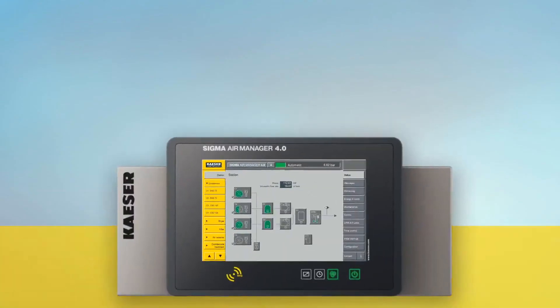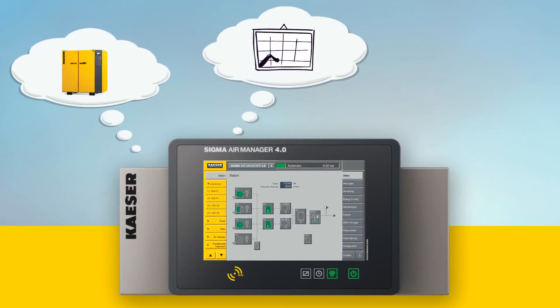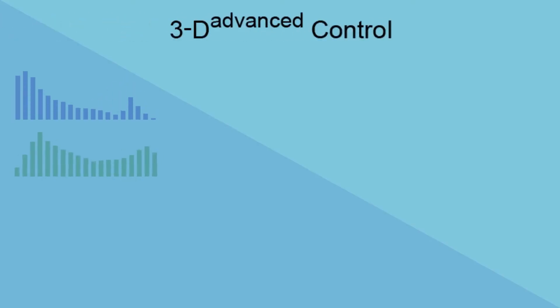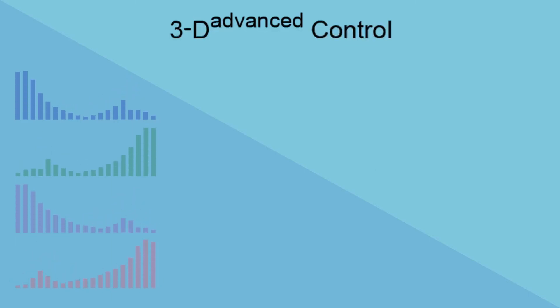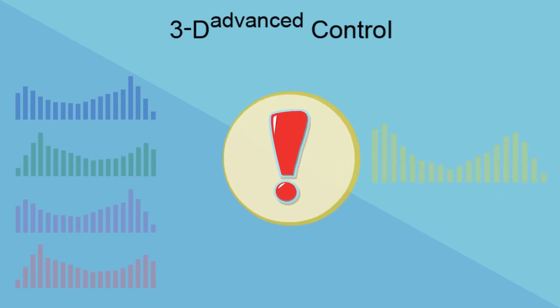The Sigma Air Manager 4.0 represents a technological breakthrough in system control. Unlike time-dependent selection switching solutions, it is flexible and adaptable. Using our proprietary 3D advanced control system, the controller constantly monitors the performance of the entire system by continuously running a multitude of simulations in the background. In this way, it is always able to determine the most energy-efficient compressor combination.